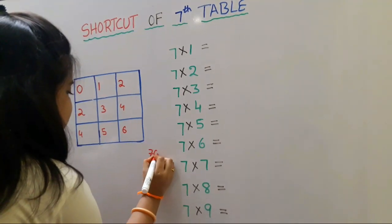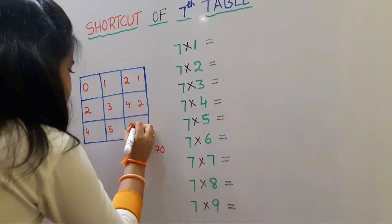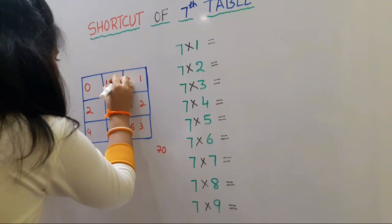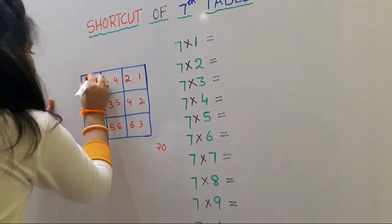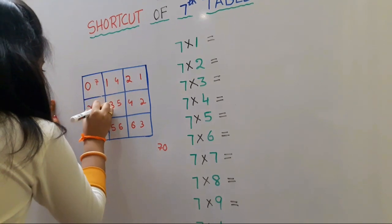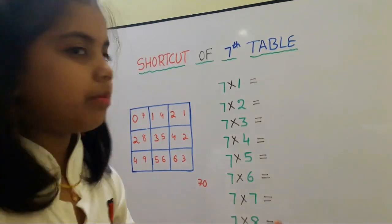Now we should write 0. Now we should write here 1, 2, 3, 4, 5, 6, 7, 8, 9. We should write these values in the table.